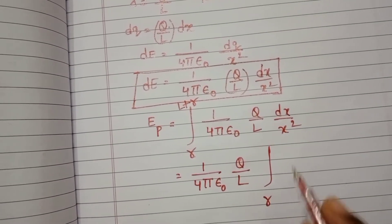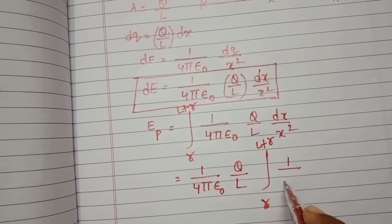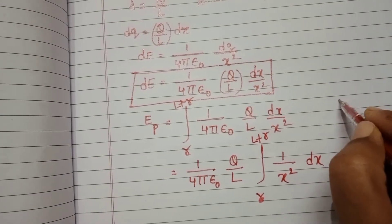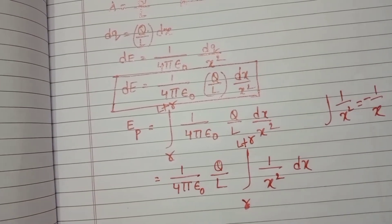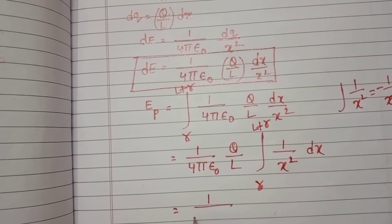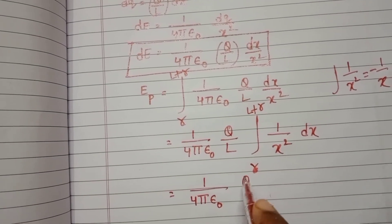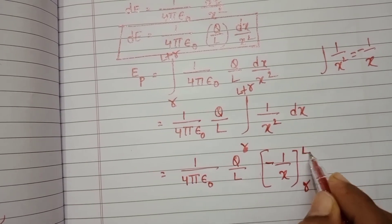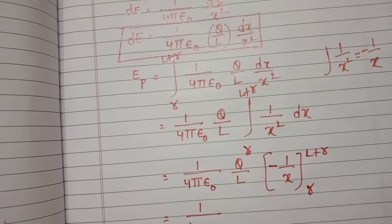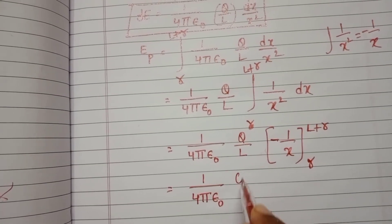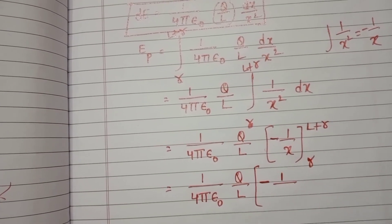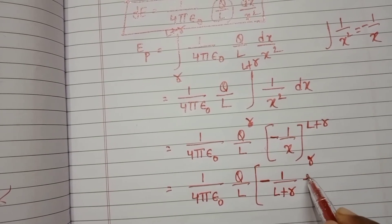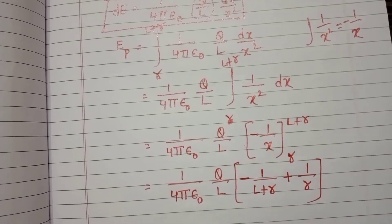Taking the constants outside, we integrate 1 by X squared with respect to DX, from R to L plus R. The integral of 1 by X squared is minus 1 by X. So the result is 1 by 4 pi epsilon-zero into Q by L into [minus 1 by X] evaluated from R to L plus R. Substituting the limits: minus 1 by (L plus R) plus 1 by R.